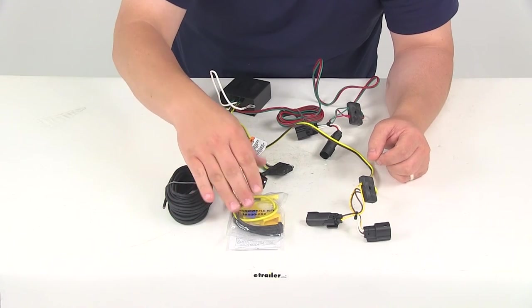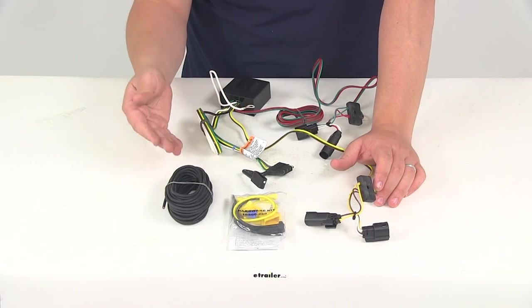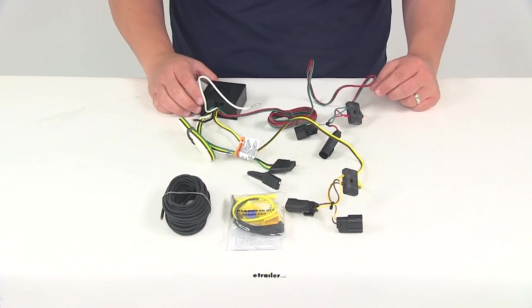Again it's going to come with the zip ties. That's going to allow you to secure any excess wiring or slack in your wiring. Keep it up and out of the way and make for a nice appearance when it comes to your installation.